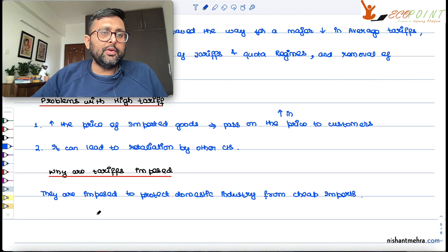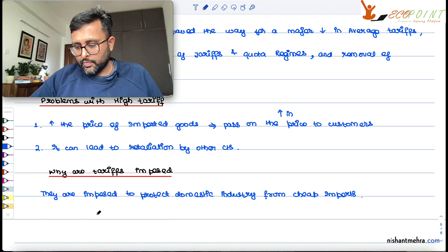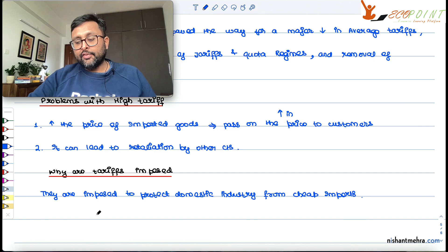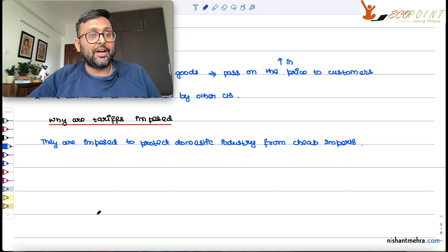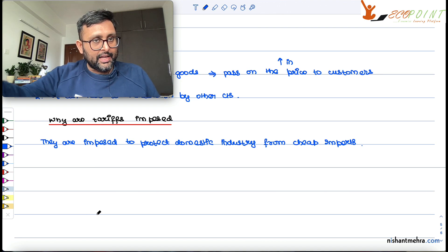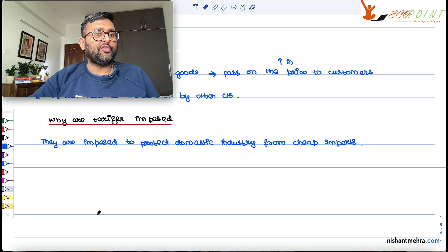Now what happened was that in 1991, India's peak tariff rates were reduced to 150%. They were 355% before reforms, but the maximum tariff rates, they have reduced from 355% to 150%. And then by the year of 2007-8, they have been brought down to 10%.